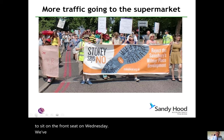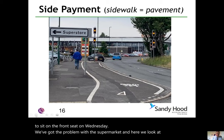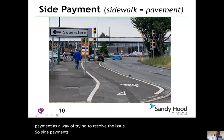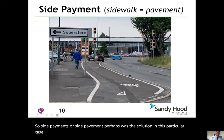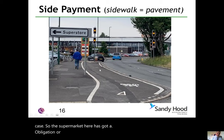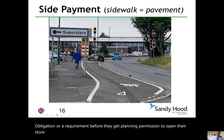We've got the problem of the supermarket, and here we look at a side payment as a way of trying to resolve the issue. So a side payment — or side pavement perhaps — was the solution in this particular case. The supermarket had an obligation before getting planning permission to open their store.